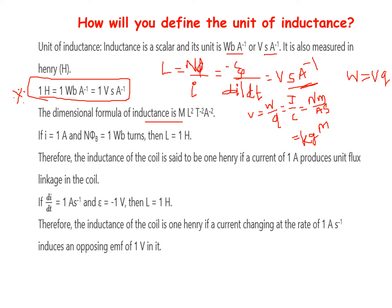So di by dt has units of ampere per second. Combining, the dimensional formula of inductance works out to kilogram meter squared, second to the power of minus 2, ampere to the power of minus 1, multiplied by second to the power of minus 1, giving ampere to the power of minus 2 overall — that is ML²T⁻²A⁻².